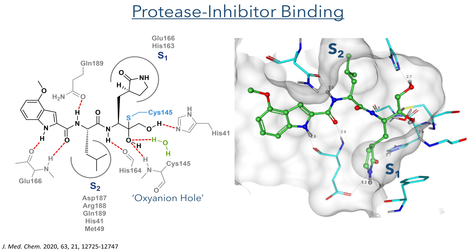We can see these binding interactions quite clearly in the crystal structure of the drug bound within the enzyme active site. This crystal structure shows the indole group held by hydrogen bonds, the alkyl chain deep in the S2 pocket, while the lactam is bound in the S1 subsite. The key covalent bond between the cysteine residue of the enzyme and the carbonyl of the drug is quite clear, and is stabilised by hydrogen bonding from the oxyanion hole, which serves to complement the nucleophilic cysteine and increase reactivity of the enzyme.